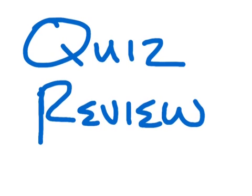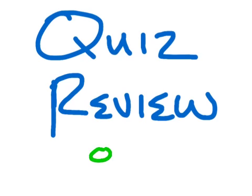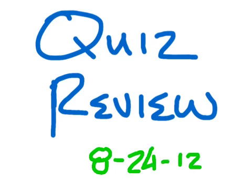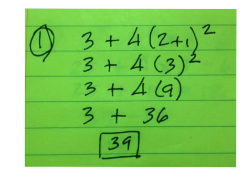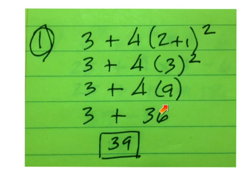Quiz review from problems 8, 24, 12. On number 1, you had to do 2 plus 1 to get 3, and then square that to get 9. 9 times 4 is 36, plus 3 is 39.